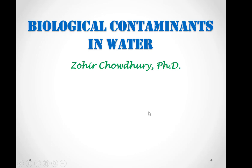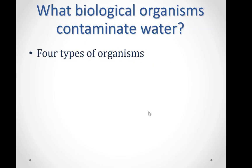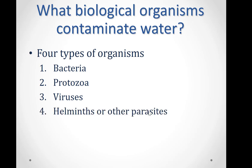Welcome everybody, my name is Zohri Chaudhary, and today we'll talk about biological contaminants in water. There are mostly four different types of organisms that contaminate water: bacteria, protozoa, viruses, and helminths or other parasites.